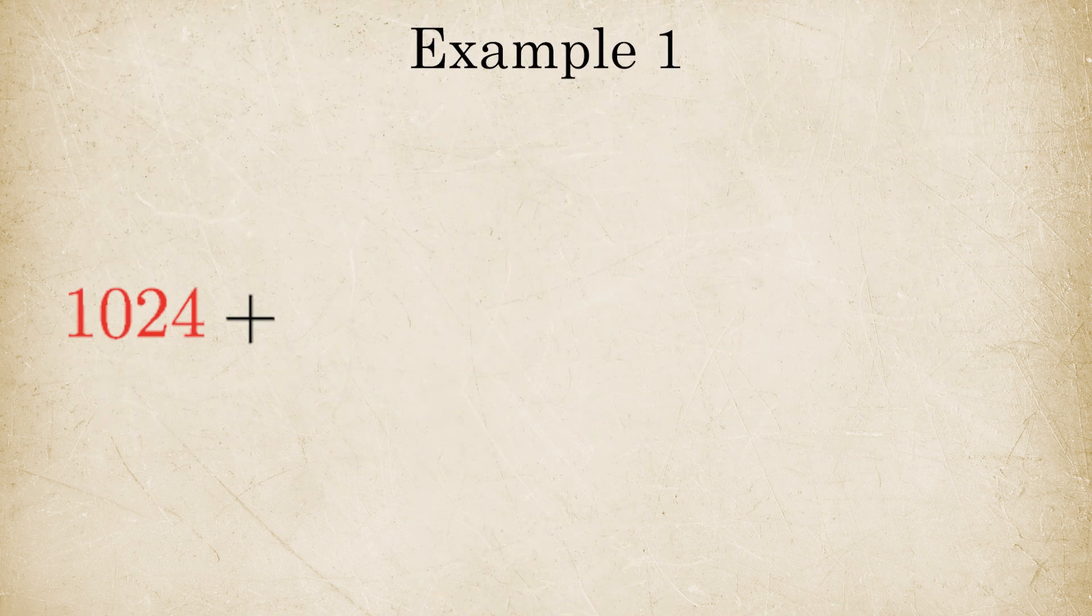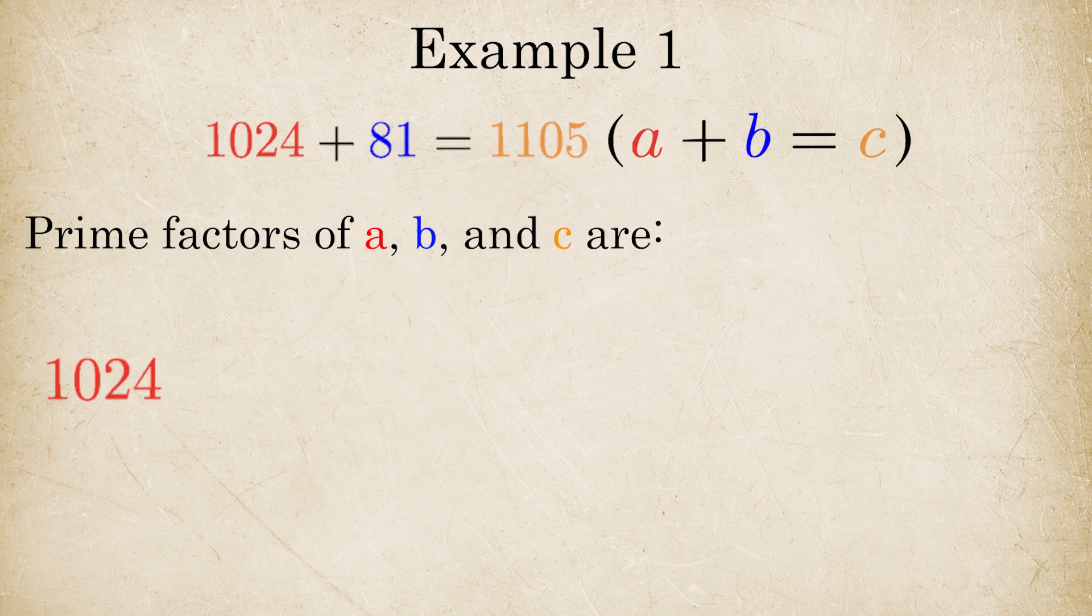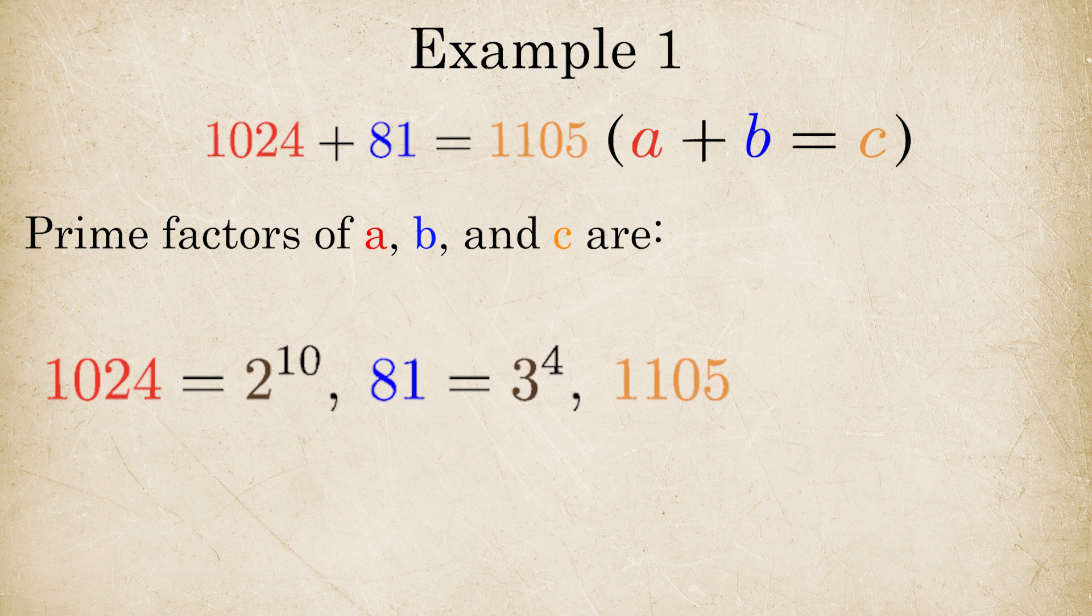1,024 plus 81 equals 1,105. Now, 1,024 is 2 to the 10th power, and 81 is 3 to the 4th power. The number 1105 has three prime factors: 5, 7, and 13. Note that A, B, and C don't share a common factor.